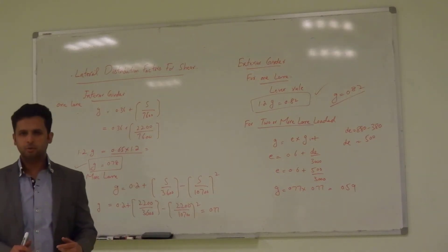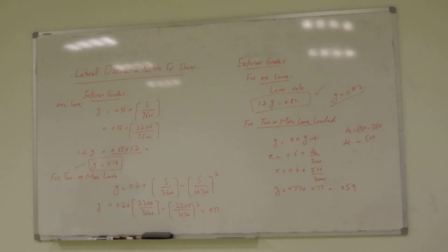Okay. So, this is a lateral distribution. Now, for example, if the axle load is 100, for example, axle load is 100 and it is 0.78. So, how much will be the load on the girder?